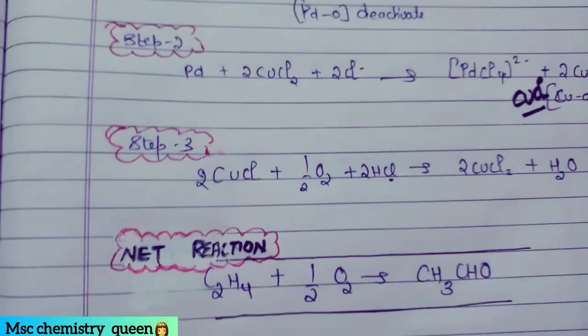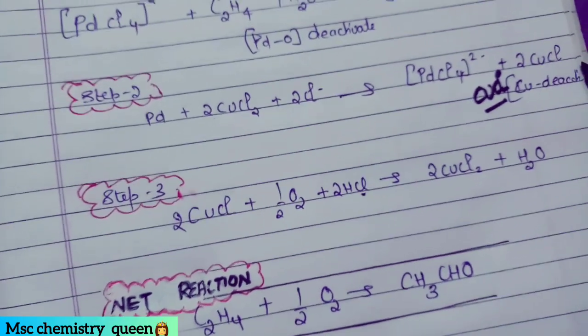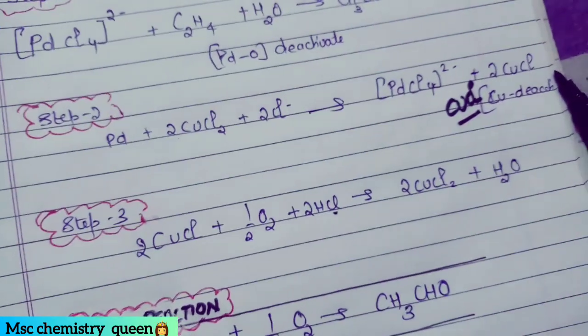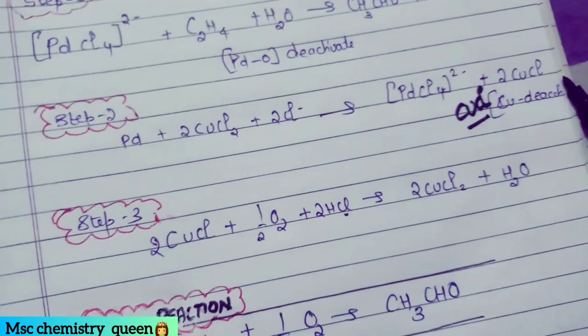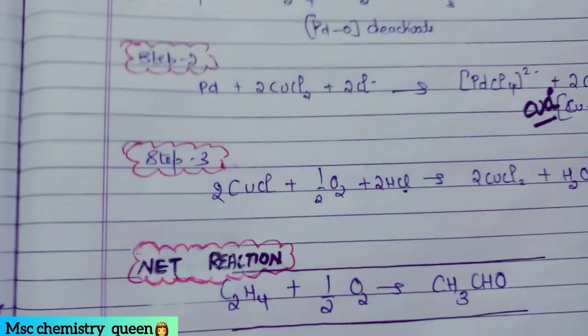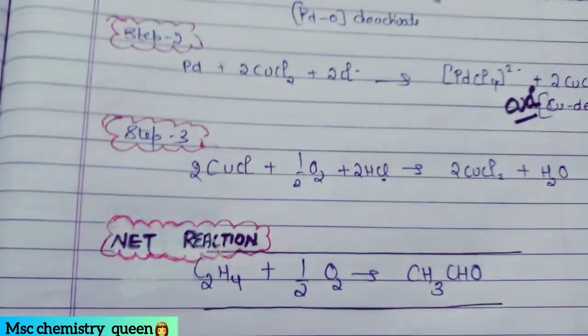So here we add step 1, step 2, and step 3. The common intermediates cancel out to give the final net reaction.